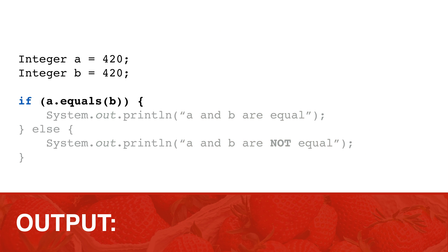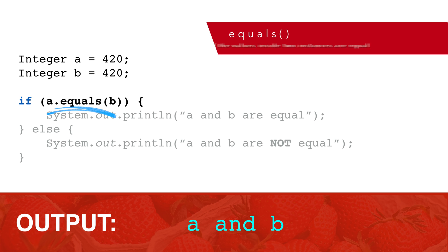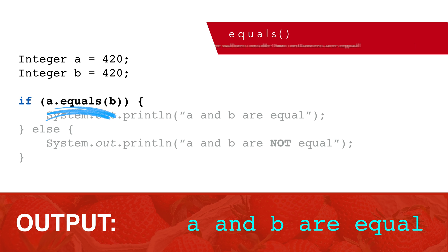When we want to see if two integer values are equal, the best option is to use the equals method. This is the same equals method we saw in earlier class tutorials.